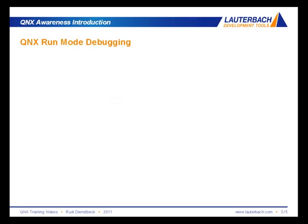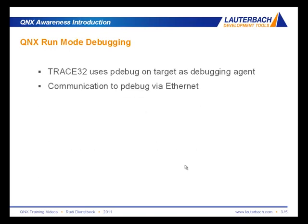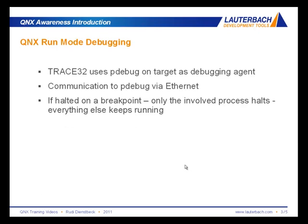On the other side, we have QNX run mode debugging. In this case, Trace32 uses the p-debug agent on the target as the debugging agent. You may know p-debug is a standard QNX debugging agent on the target. The communication is done via Ethernet — so Trace32 talks via Ethernet directly to the target and directly to p-debug. If halted on a breakpoint, only the process controlled by p-debug will halt; everything else keeps running. So one process is halted, and the kernel, other processes, and all the drivers keep running.